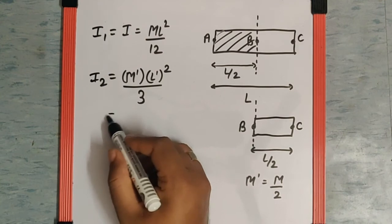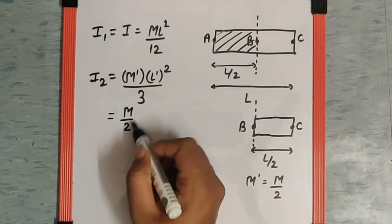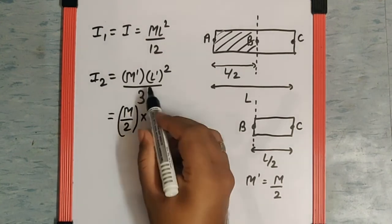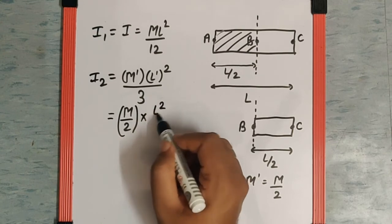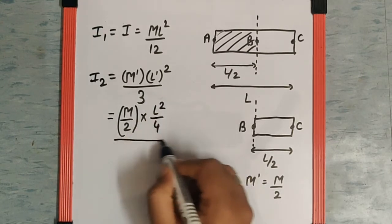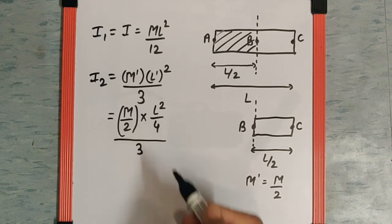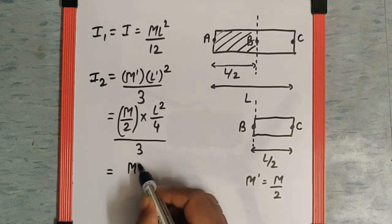We know M' is M by 2, L' is also L by 2. The square will be L² by 4 upon 3, so if we rewrite this it can be written as ML² by 3 into 4 into 2, which is 24.